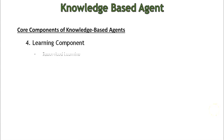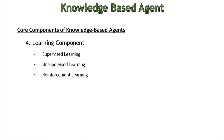The fourth core component is the learning component. Learning updates and improves the knowledge base based on new experiences and information. The methods used are supervised learning, unsupervised learning, and reinforcement learning. Supervised learning involves learning from labeled examples. Unsupervised learning involves finding interesting patterns from unlabeled data. Reinforcement learning involves learning through trial-and-error interactions with the environment.